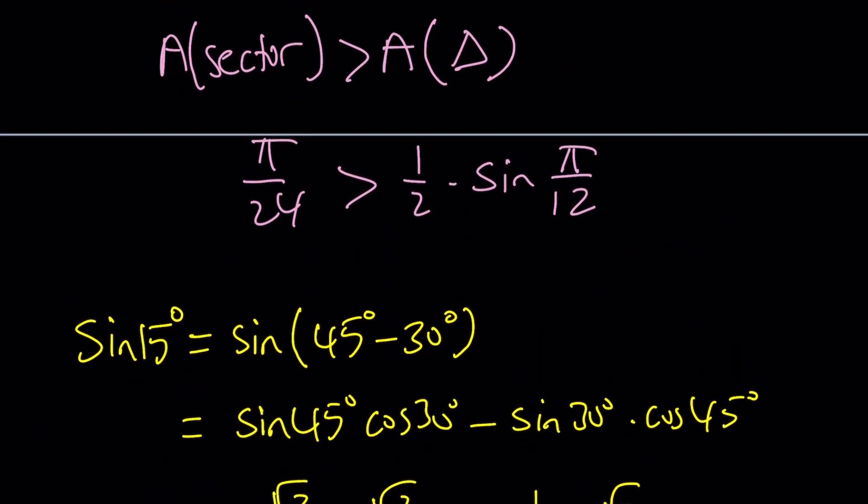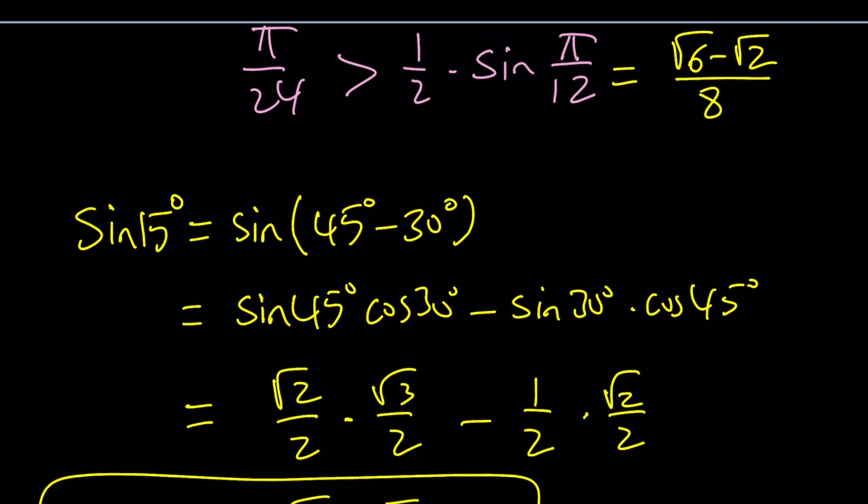And this just shows us what? This shows us that π/24 is greater than √6 - √2 over 8, which is what I was trying to compare. Okay, great.